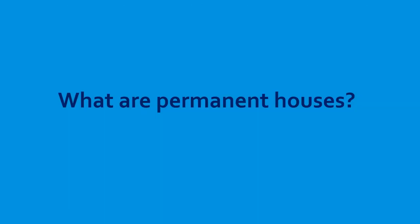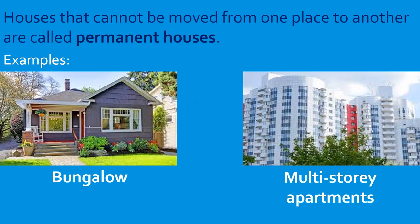What are permanent houses? Houses that cannot be moved from one place to another are called permanent houses. Examples are bungalows, multi-storey apartments, towers, and buildings. The house stays in one place — we cannot take the entire bungalow with us. We can travel but the house cannot travel with us, so that makes it a permanent house.